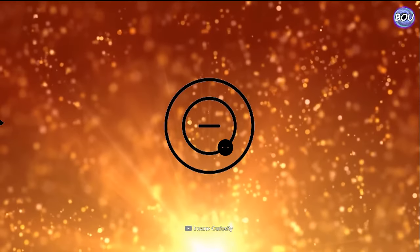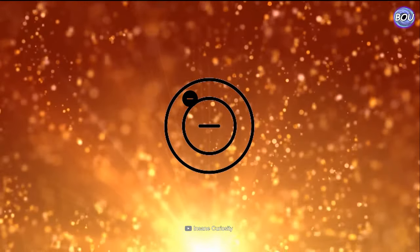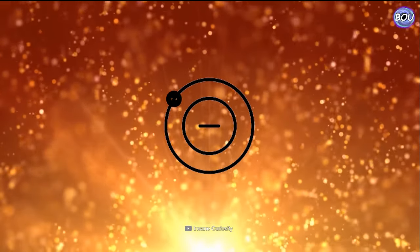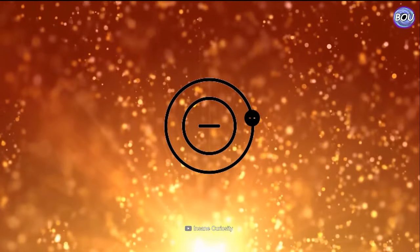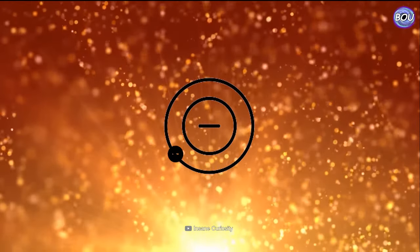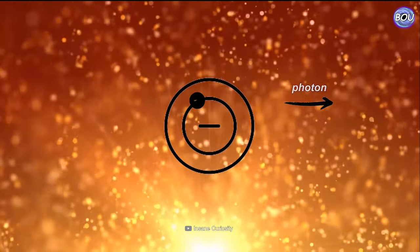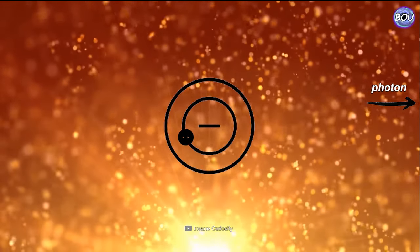When we give energy to an electron, it moves from its ground state energy level to higher energy levels. Since it's unstable in those states, it releases its energy and returns back to the ground state. This energy is emitted in the form of photons, or light.